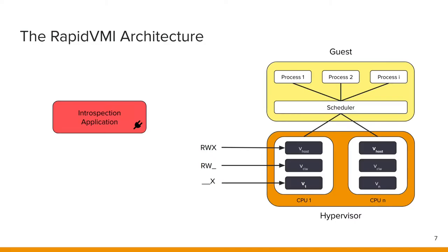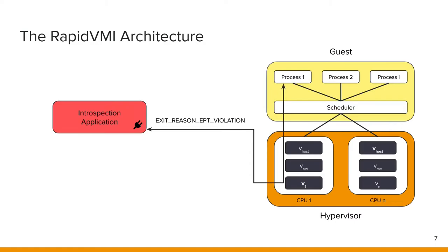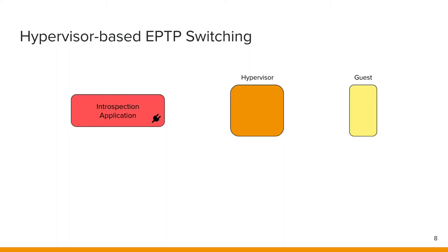We realize the aspects of our introspection framework by switching between those three views. First, when we encounter a memory access violation on the execute view, we switch to the read-write view to hide the code — this was first demonstrated by the malware analysis platform Drakvuf. Second, when the scheduler of the guest system switches to another process, we intercept this event and load the respective page tables in the hypervisor, thereby activating or deactivating our modifications. We also factor out expensive operations such as handling scheduler and memory access events to the hypervisor.